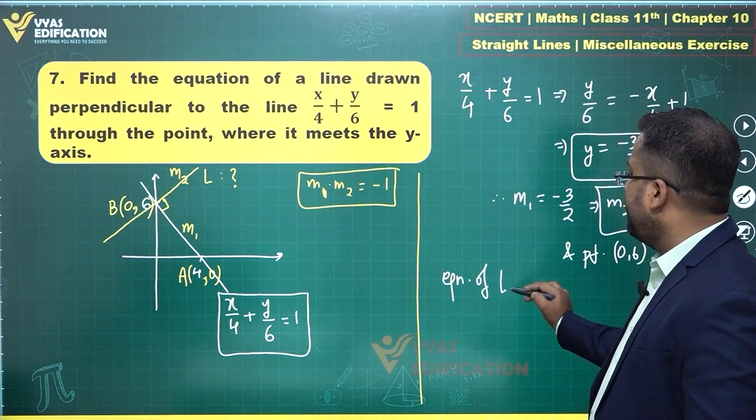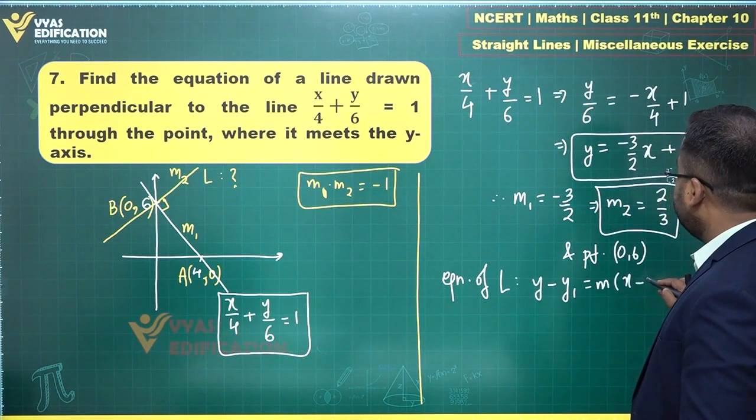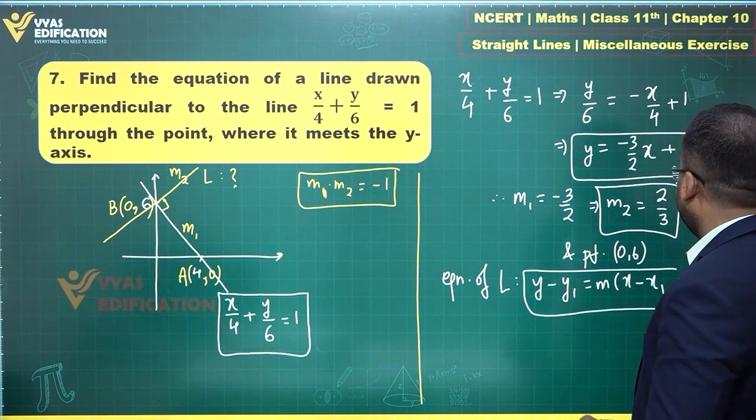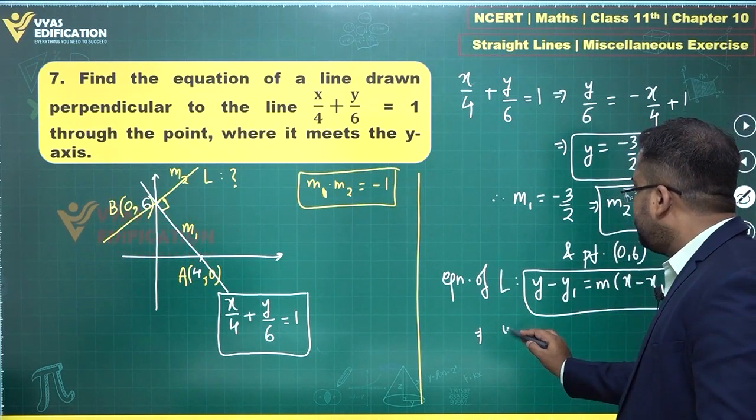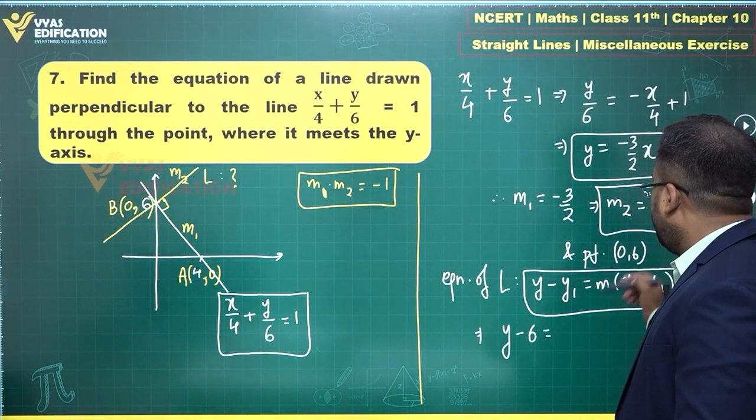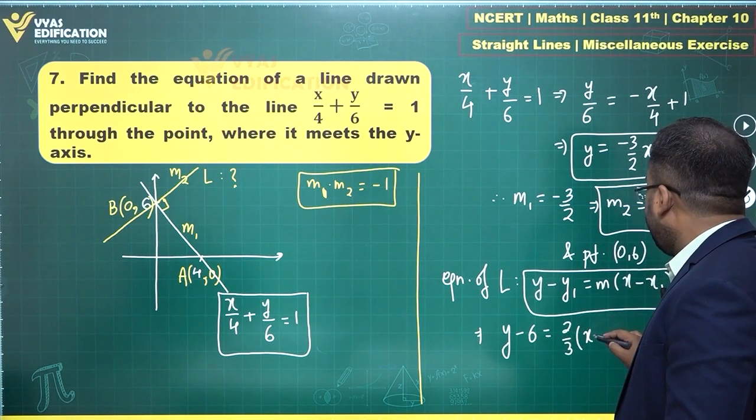The equation of L can be written in point-slope form, which is y - y1 = m(x - x1). What does this form tell me? y - 6 = 2/3(x - 0).